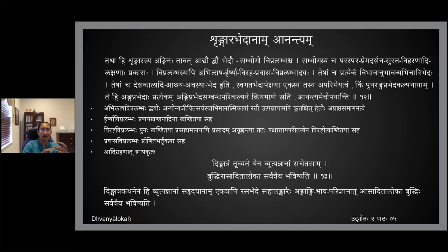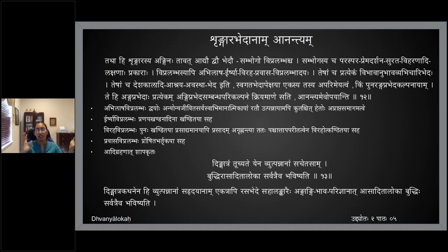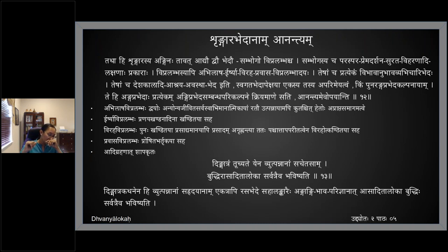Next is Pravasa Vipralambha, where it is proshita barthrika — whose husband has gone away on journey and she is left alone. Adhigrahanath shapa krithaha — which is your Meghasandesham — because of a shapam the Yaksha is separated from the Yakshi and the Yakshi is alone. Both of their Vipralambha shringaram is shapa vipralambha shringaram.